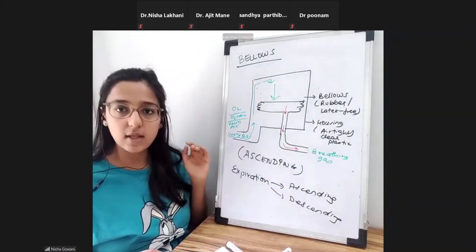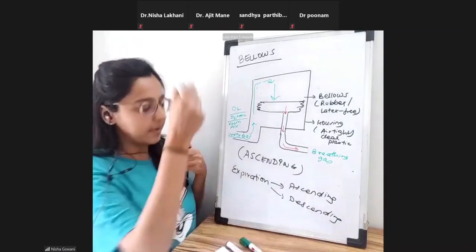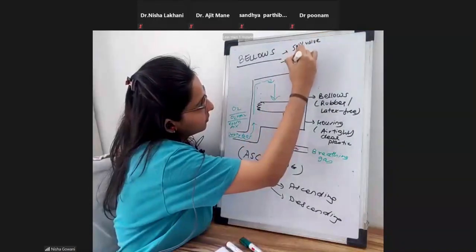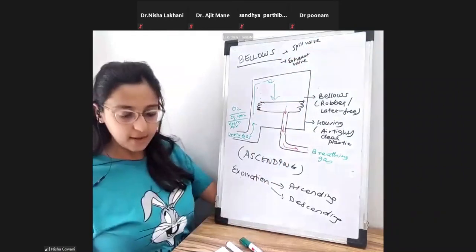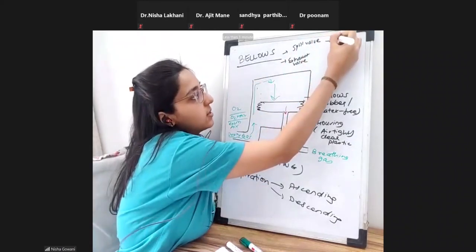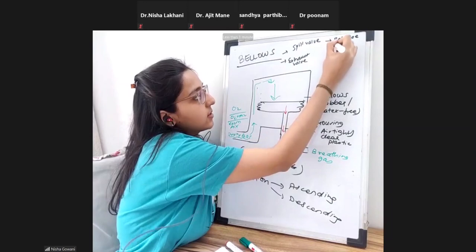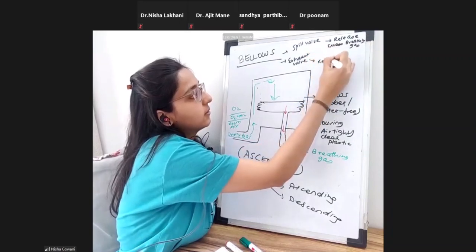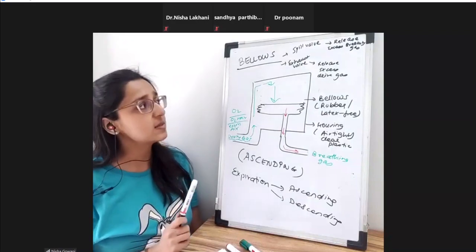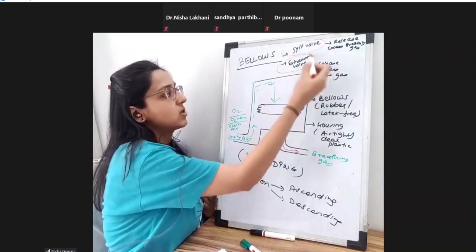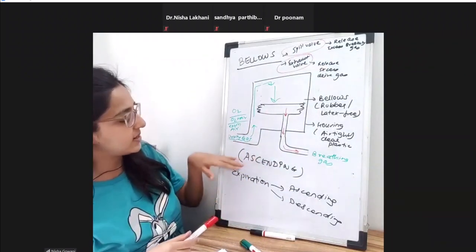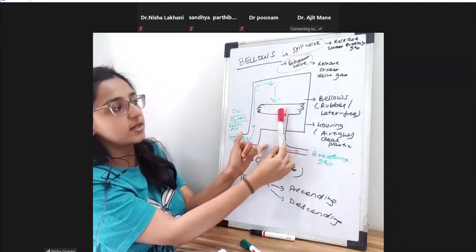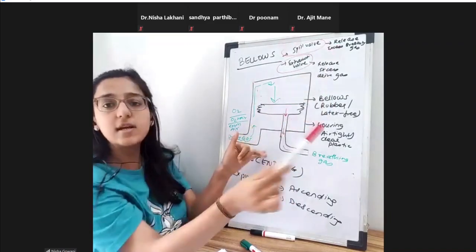There are two valves in a bellows assembly. There is a spill valve and an exhaust valve. The spill valve releases excess breathing gas. The exhaust valve — if there is excessive drive gas pressure generated inside — will release the driving gas. The spill valve will release excess breathing gas if there is excess pressure generated within the bellows while filling.